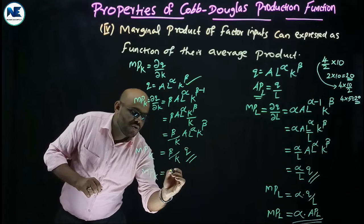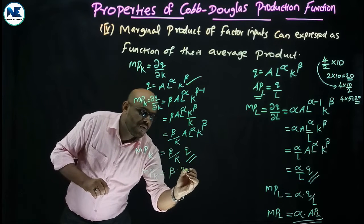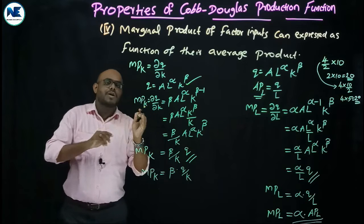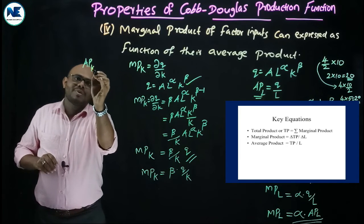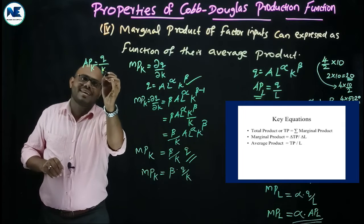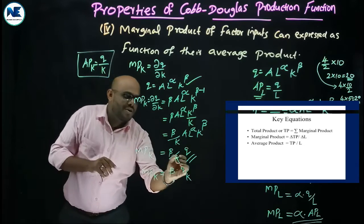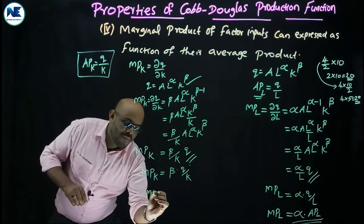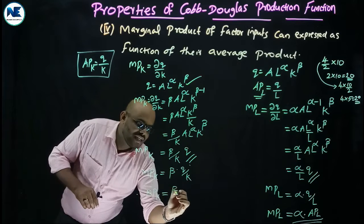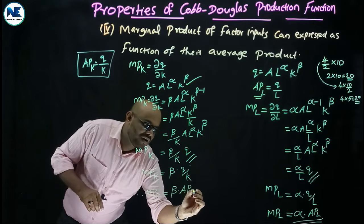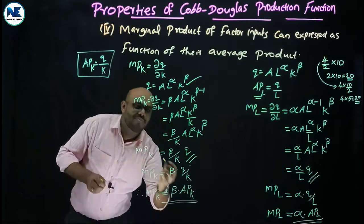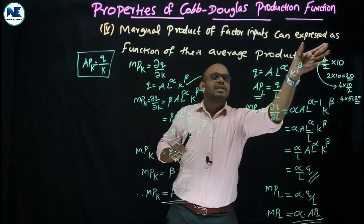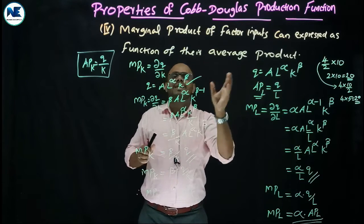So the marginal product of capital equals beta · Q/K. The average product of capital is Q/K, so the marginal product of capital equals beta times the average product of capital. This proves that the marginal product of the factor input capital can be expressed as a function of its average product.